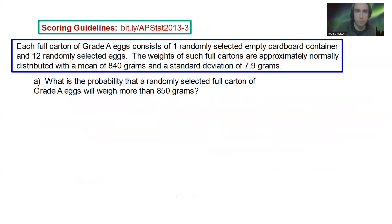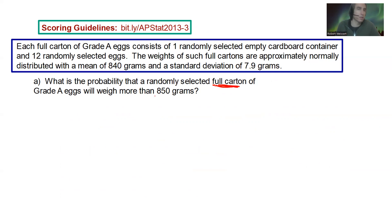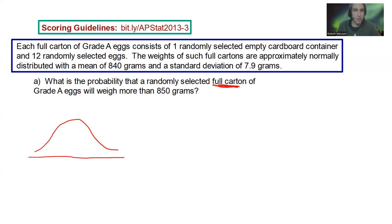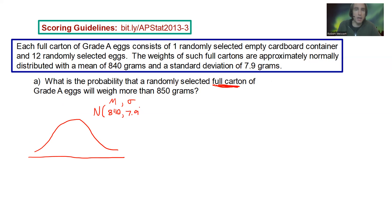Let's start with part A: what is the probability that a randomly selected full carton of grade A eggs will weigh more than 850 grams? This is going back to unit 1, doing the normal curves. What you want to do on this problem is sketch out a normal curve — always sketch it out. Write capital N; your mean is 840 and your standard deviation is 7.9. Write N(840, 7.9) — that will take care of your parameters.